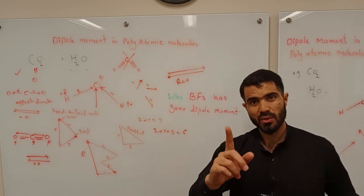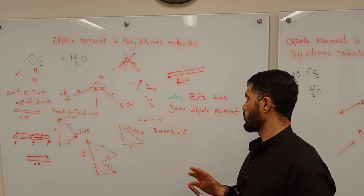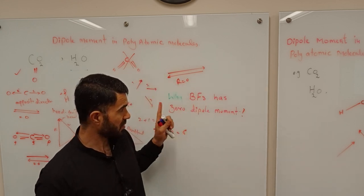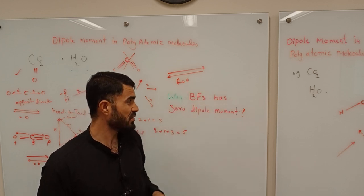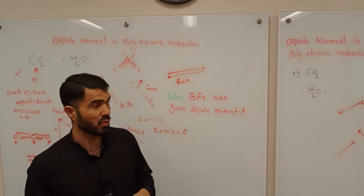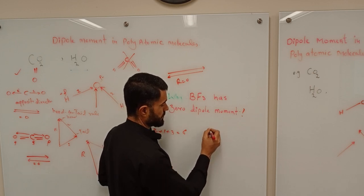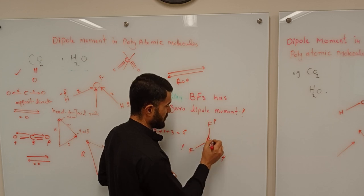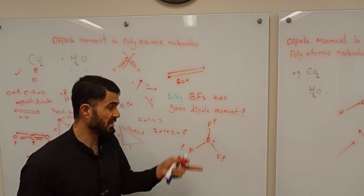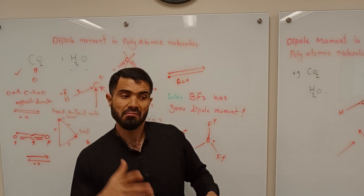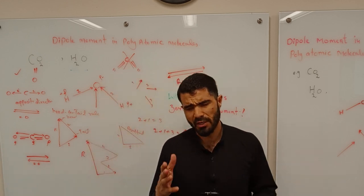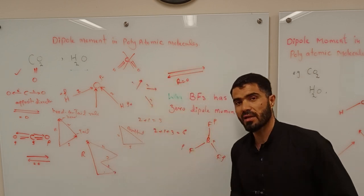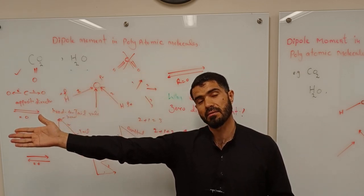Now there is a question for you: Why does BF₃ have zero dipole moment? I am leaving this question for you. If you tell me in the comment box that you really need an explanation of why BF₃ has zero dipole moment, I will definitely explain it. In BF₃, boron has positive and negative charges present, yet its dipole moment is still zero. If a molecule already contains charges and still has zero dipole moment — how is that possible? Let me know in the comments and I will explain.